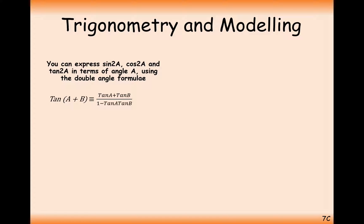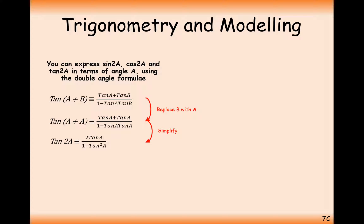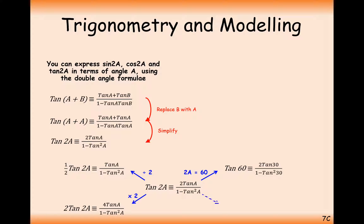For tan a plus b, we do the same thing — set b equal to a, giving tan a plus a equals tan a plus tan a over 1 minus tan a tan a. So tan 2a equals 2 tan a over 1 minus tan squared a. Again, you can set a equal to certain angles, double both sides, use half angle rules, or vary this formula as much as you want, just as with the sine and cos ones.